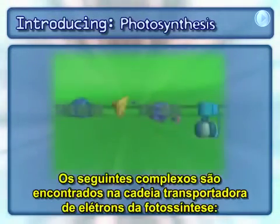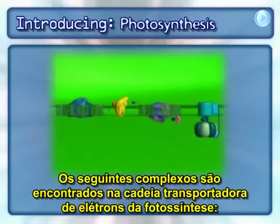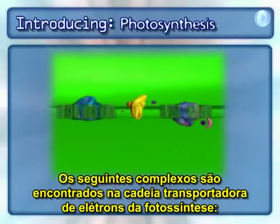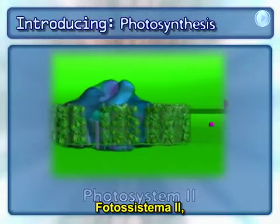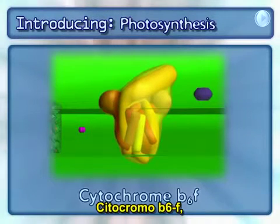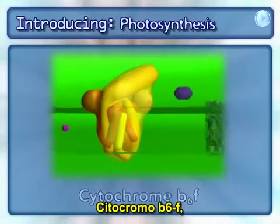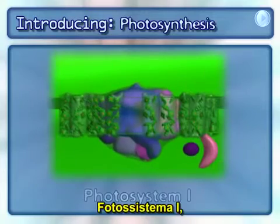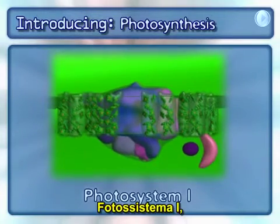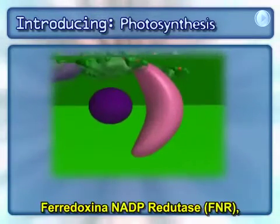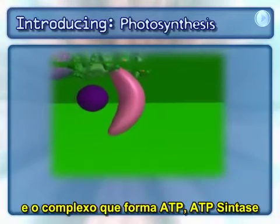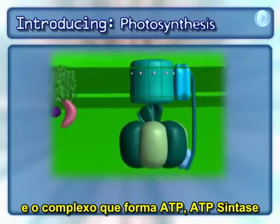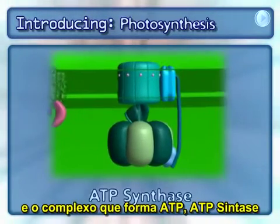The following complexes are found in the photosynthesis electron transport chain: Photosystem II, cytochrome B6F, Photosystem I, ferredoxin NADP reductase, and the complex that makes ATP, ATP synthase.